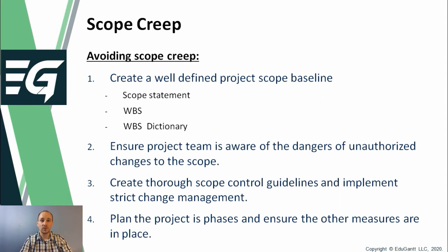Once the requirements have been reviewed and approved, start compiling a comprehensive scope statement and create the work breakdown structure by decomposing the scope into sub-components based on the envisaged deliverables. Then create the work breakdown structure dictionaries which contain more detailed information of each of the work packages. Once the scope statement, the work breakdown structure, and the work breakdown structure dictionary have been completed, arrange a meeting with the relevant key stakeholders to review them and approve them as the scope baseline. This baseline can from there on out only be changed through formal change control procedures.